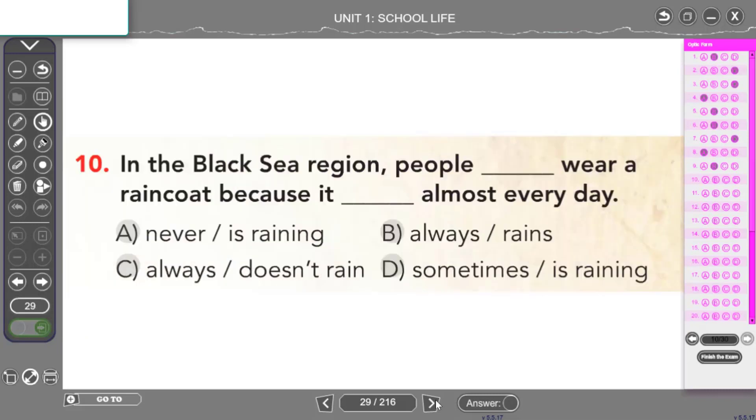In the Black Sea region Karadeniz bölgesinde people always wear a raincoat. İnsanlar yağmurluk giyer. Because it rains almost every day. Çünkü hemen hemen her gün yağmur yağar şeklinde bir cümle kurmam gerekiyor. İnsanlar ne yapar diyeceğim burada. Bu genel bir ifade yani genellikle olan bir şey olduğu için geniş zamanda kullanmam gerekiyor cümlemi. İnsanlar her zaman yağmurluk giyer demem gerekiyor. Yani always yapısını kullanmam gerekiyor. Çünkü hemen hemen her gün yağmur yağar derken de it öznesiyle ne yapıyordum? Eğer olumlu bir cümle kuracaksam ki burada olumlu bir cümle kuracağım fiilime -s takısı getirmem gerekiyordu. Yani bu şekilde cümlemi kurabilirim. In the Black Sea region people always wear a raincoat because it rains almost every day.